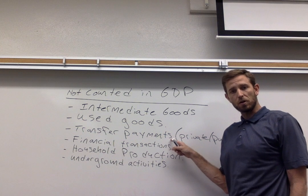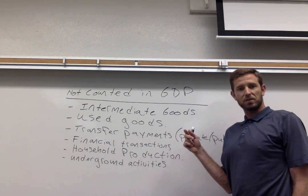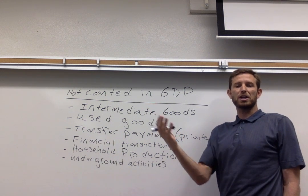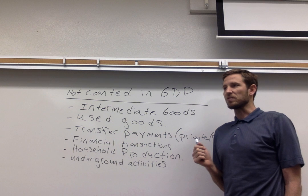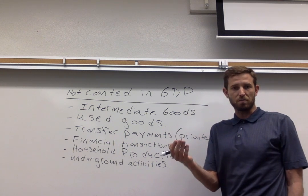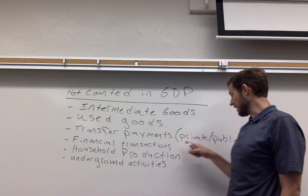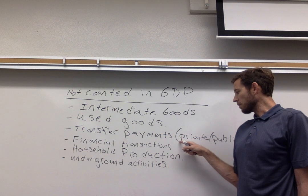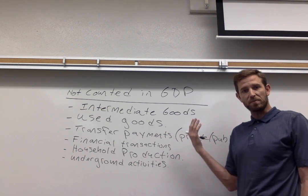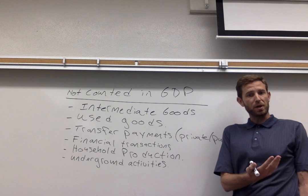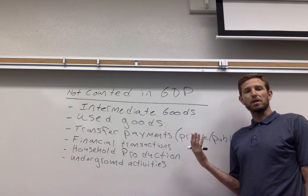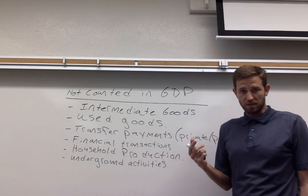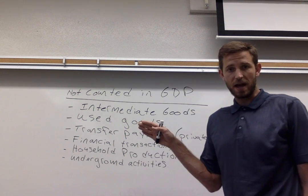We don't count so-called transfer payments. Transfer payments are any time a person is exchanging money without a corresponding exchange of a good or service. For example, if your parents give you some money, that's a private transfer payment. If you were to get some money from the government — through one of many different programs — and it's not in exchange for some work or service you're providing, that'd be a public transfer payment. For all of these transfer payments there is no production involved, and as a result we don't want to count that in GDP.